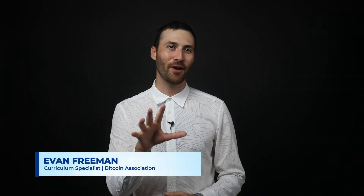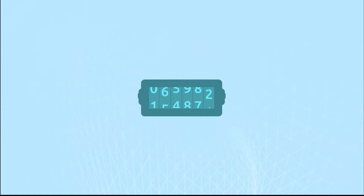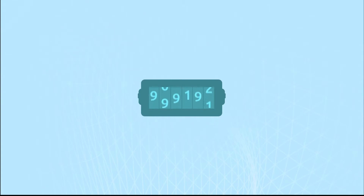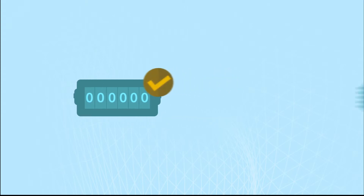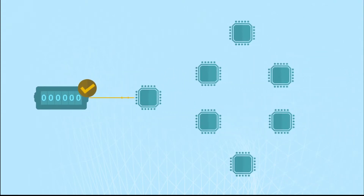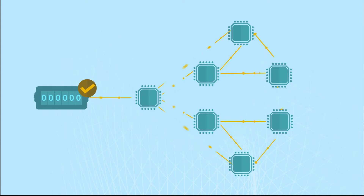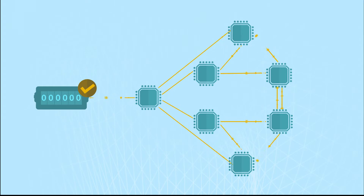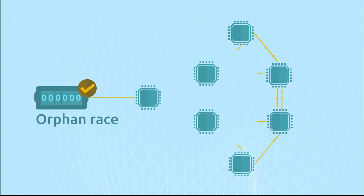When a node finds a proof-of-work, it broadcasts the block to all nodes. Once a hash puzzle is solved by a node, it must quickly propagate the solution to all other nodes on the network to minimize the chance of a competing node finding their own valid proof-of-work and also propagating it to the network. Such a situation is referred to as an orphan race.